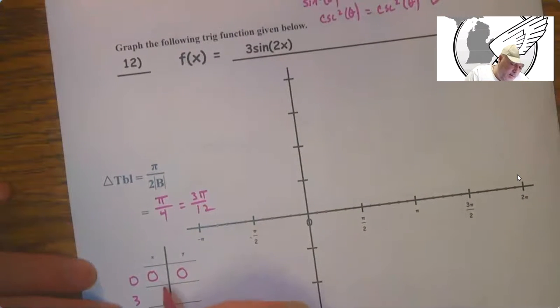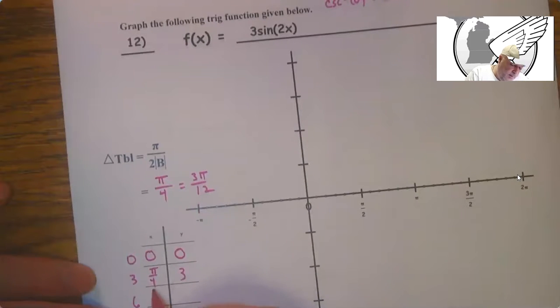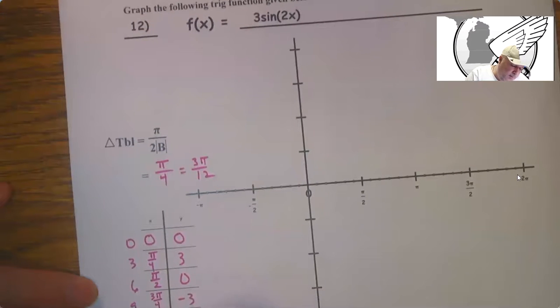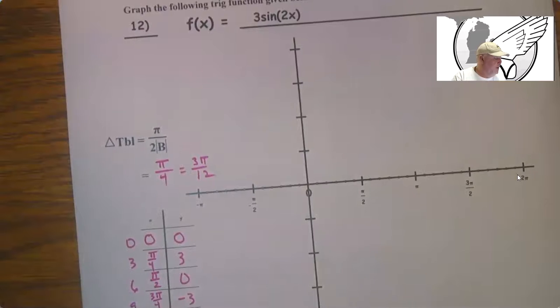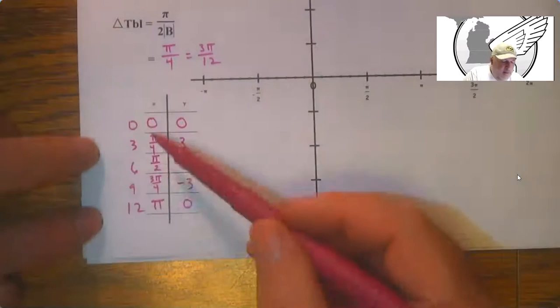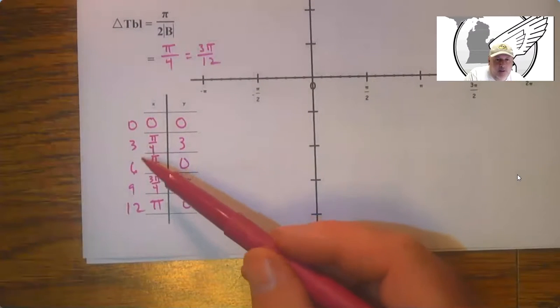And then at 3, so this will be π over 4. We're going to be up to 3. This will be π over 2 back down to 0. This will be 3π over 4 down to negative 3. And then this will be π 0.